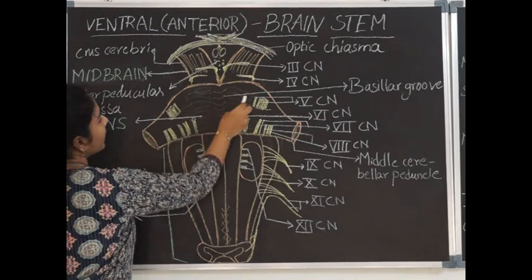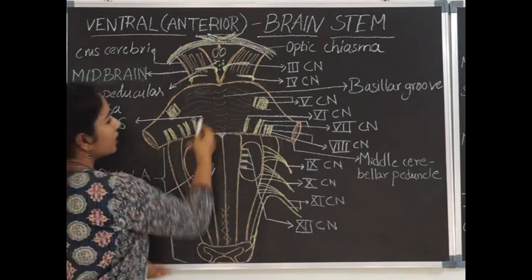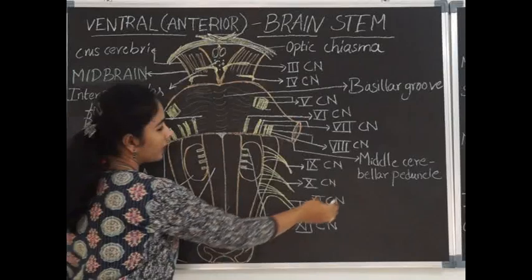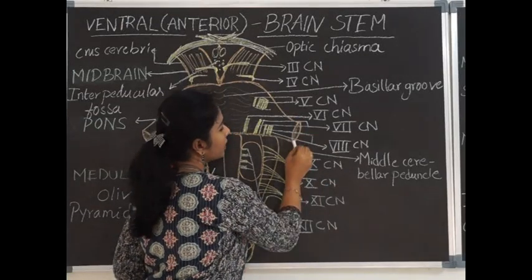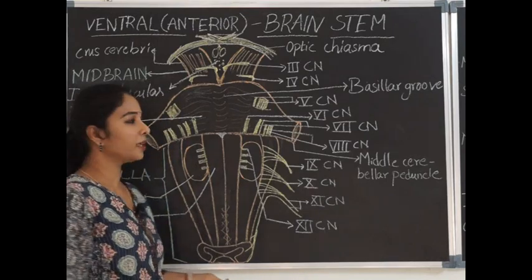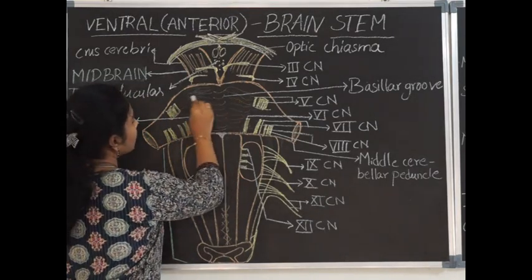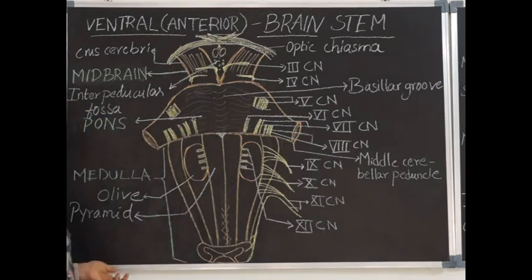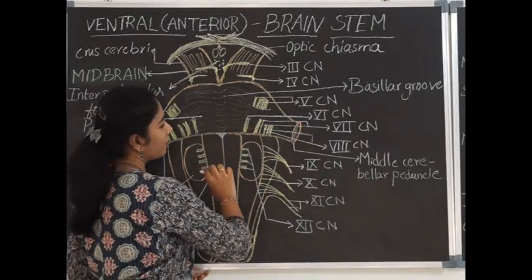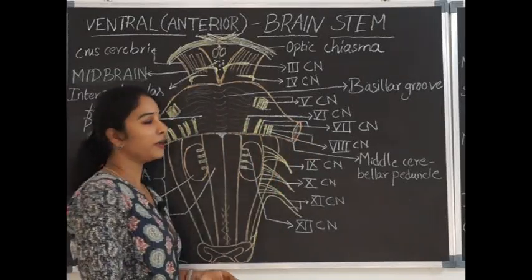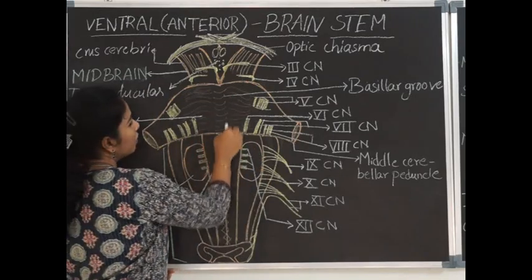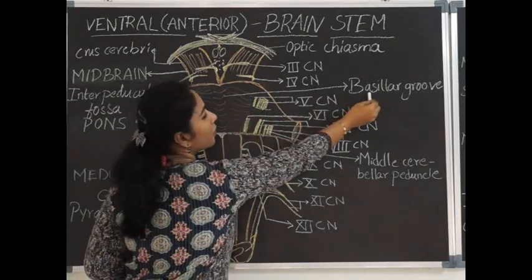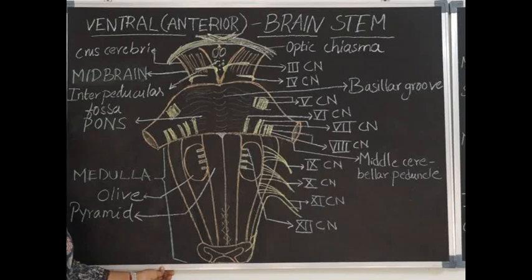The anterior surface of the pons — the pons is also called a bridge because it connects the middle cerebellar peduncles. On either side, the pons continues with the middle cerebellar peduncles which connect to the cerebellum. Anteriorly, the pons is striated by transverse striations formed by fibres called pontocerebellar fibres, which travel towards the middle cerebellar peduncle. The most conspicuous feature is the groove in the midline called the basilar groove, in which the basilar artery is lodged.